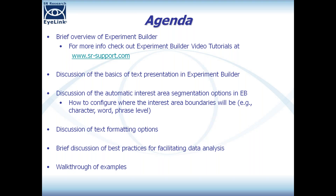Then we're going to talk about the basics of text presentation in Experiment Builder — how do you set up the text to be used on each trial, how do you actually present the text. Then we'll talk about how you can use Experiment Builder's automatic interest area segmentation tool and how you can configure options to determine where the interest boundaries will be. The interest areas can be configured at the character, word, phrase level, or in a custom manner — potentially at a morpheme or phoneme type level.